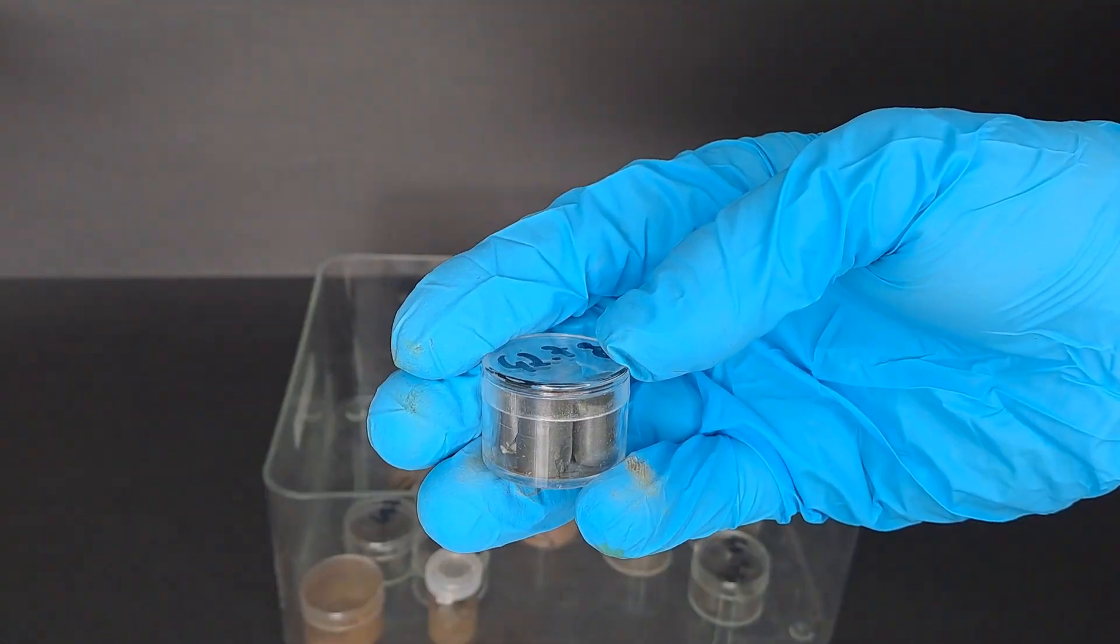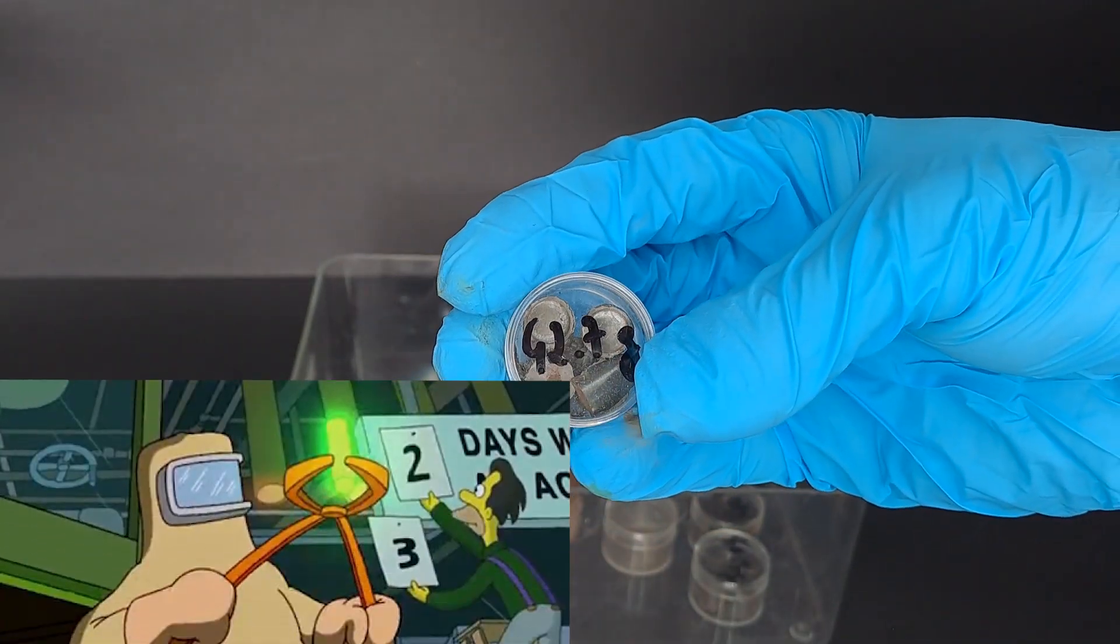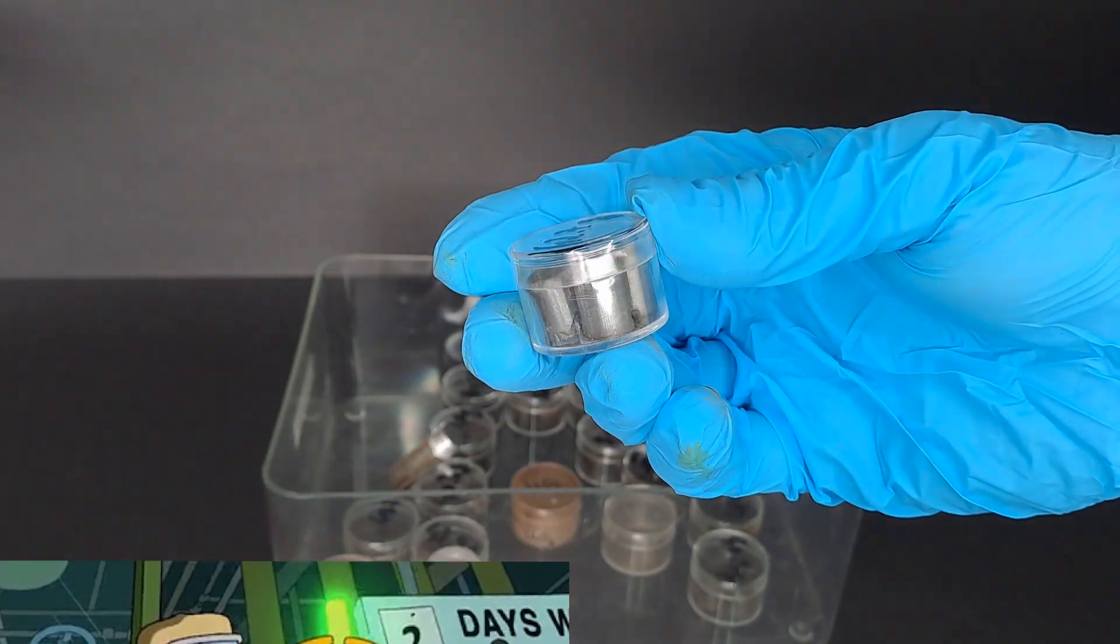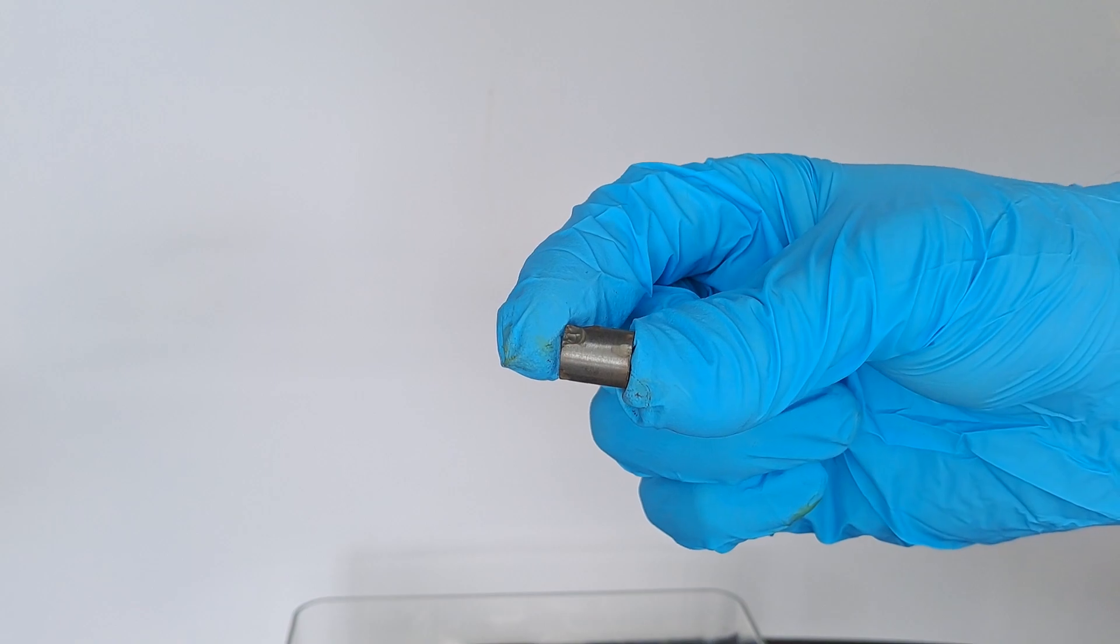These are pellets made from uranium dioxide. If you were to stack several of them together, you would have what's called a fuel rod. This uranium dioxide is extremely dense, but the radiation it emits is still within reasonable limits.